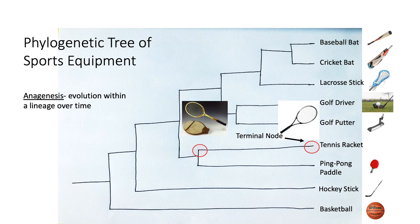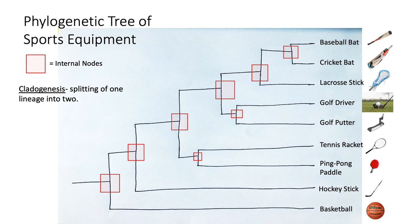It's important to note that phylogenetic trees occur over time. For example, the tennis racket present at the terminal node has evolved and is different from the tennis racket earlier in the branch. This type of evolutionary change is called anagenesis, because evolution is occurring within a lineage over time. This occurs on all of the OTUs on their branches.